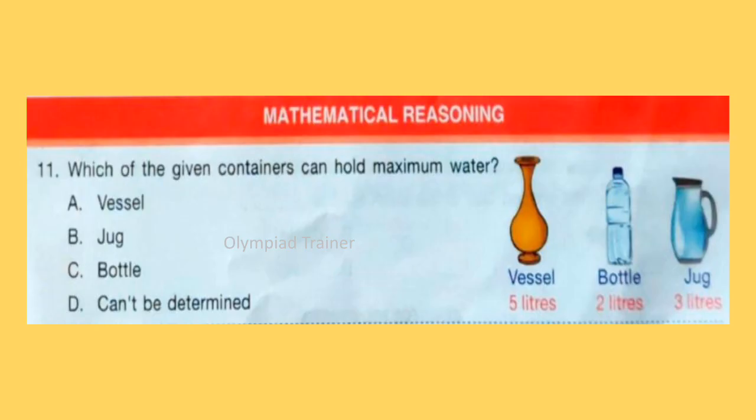Next section, Mathematical Reasoning. Question 11: Which of the given containers can hold maximum water? Now 3 figures are given: vessel, bottle and jug, and their capacity is also mentioned. So answer is Option A, Vessel.